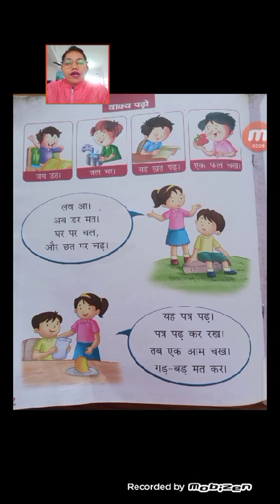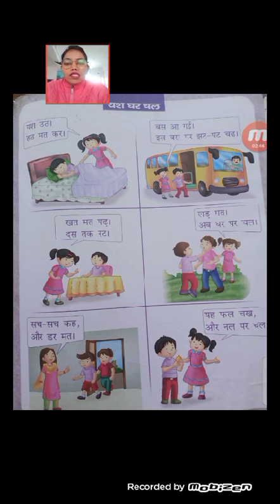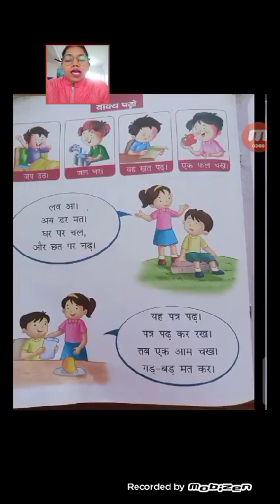इसको इसी तरह से आपको रीड करना है जैसे आपकी मैम ने रीड किया है। इसके बाद आप page number 21 open करेंगे — इसमें दूसरा page reading के लिए दिया है जहाँ दो अक्षरों के बने हुए शब्द हैं। यश उठ, हट मत कर, बस आ गई, इस बस पर जट पट चढ़, खत मत पड़, दस तक रट, लड़ मत, अब घर चल, सच सच कह, और डर मत, यह फल चख, और नल पर चल।